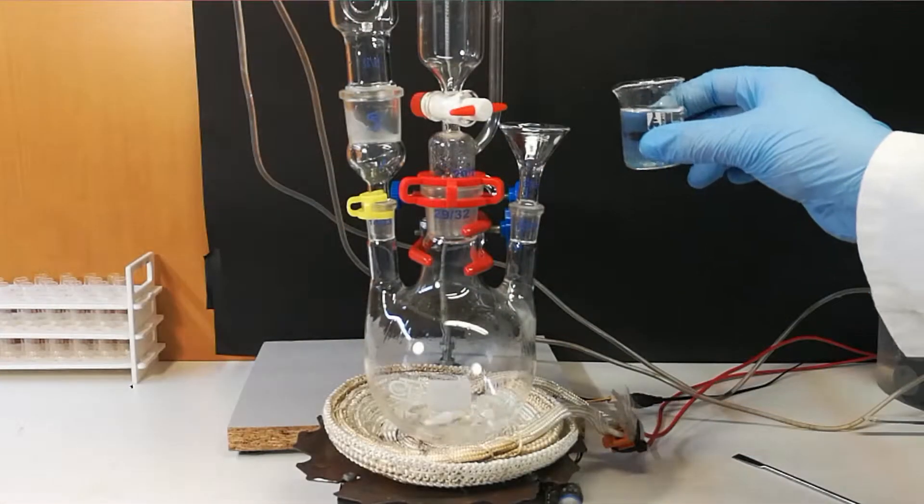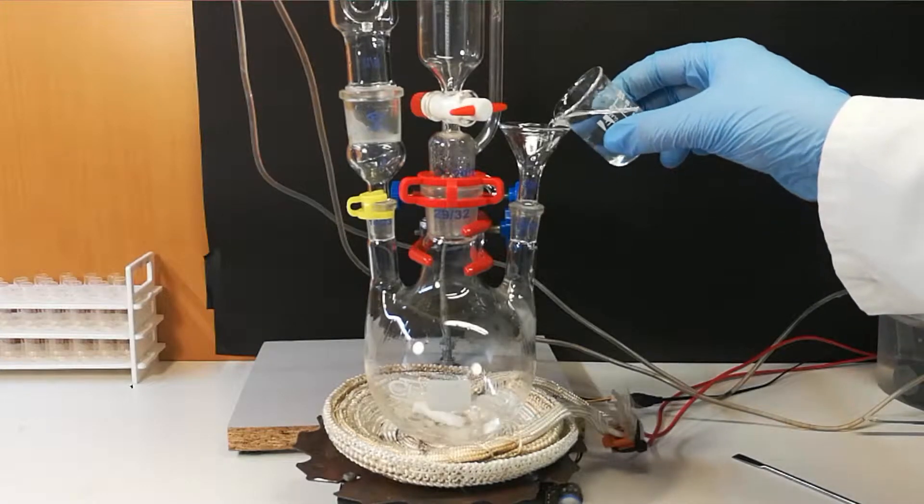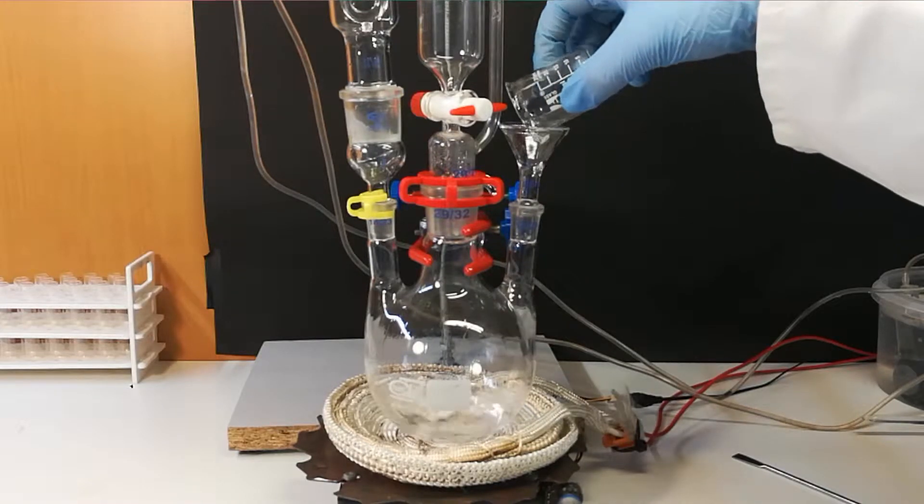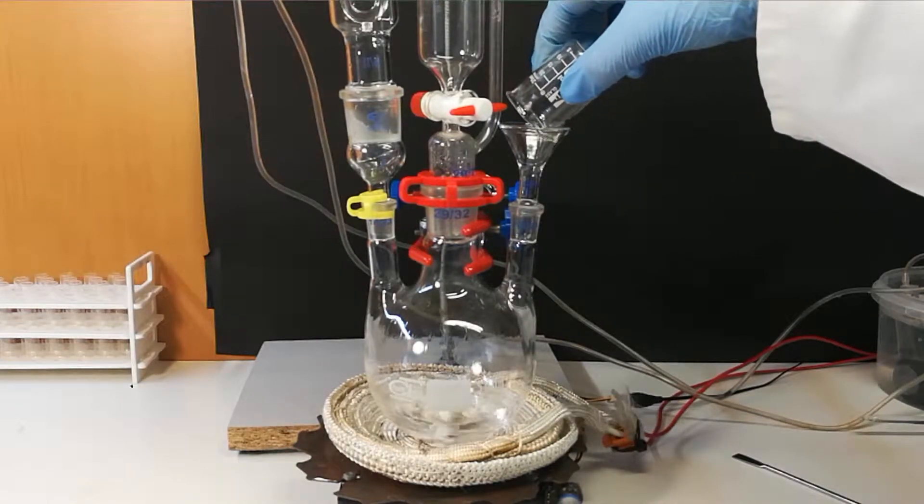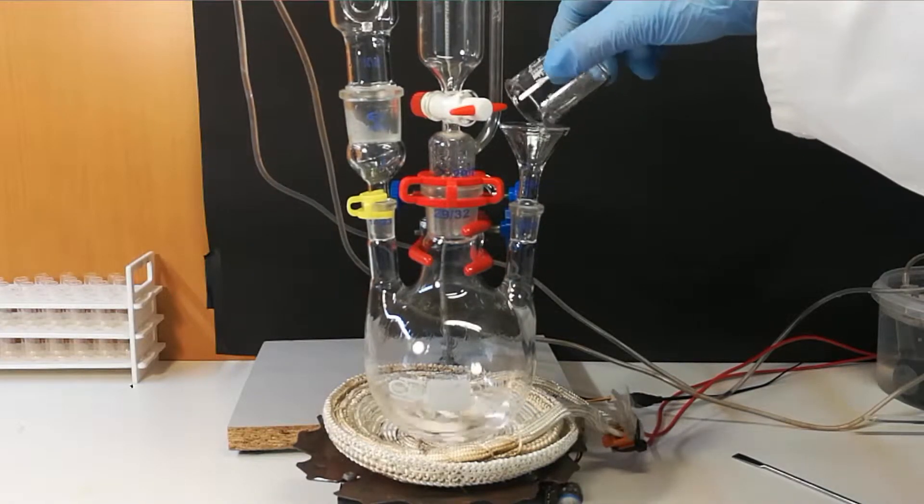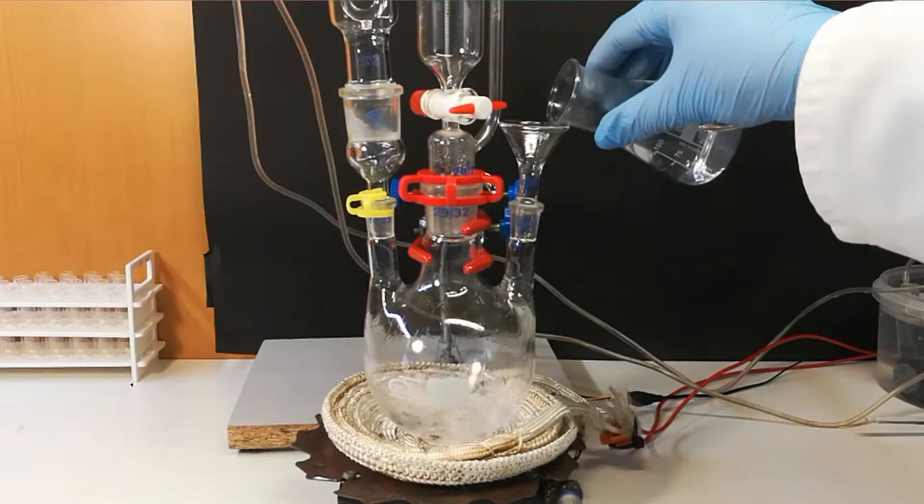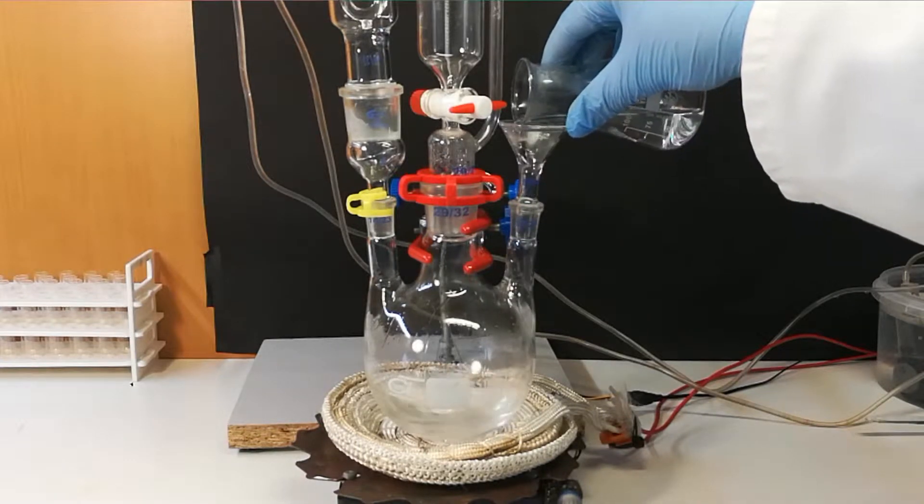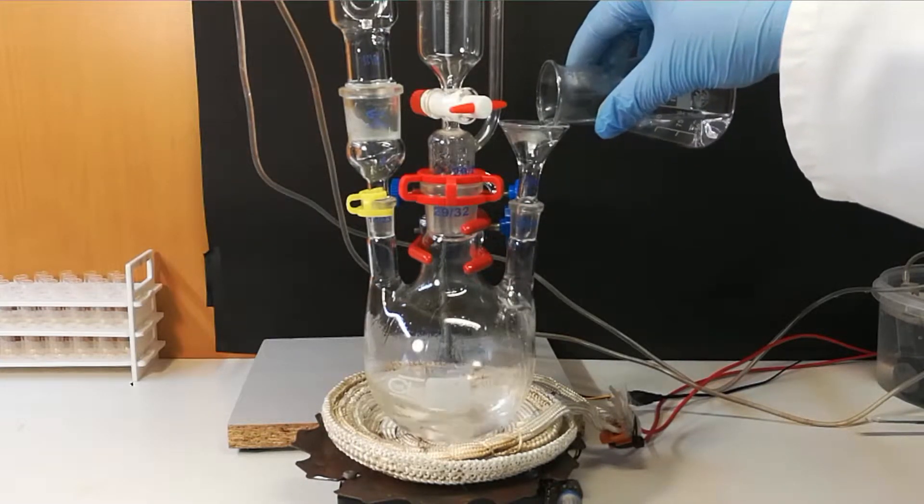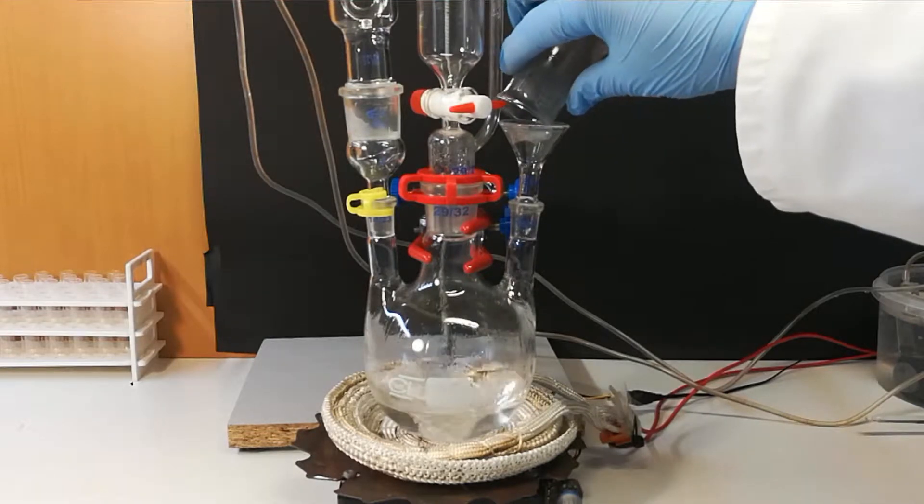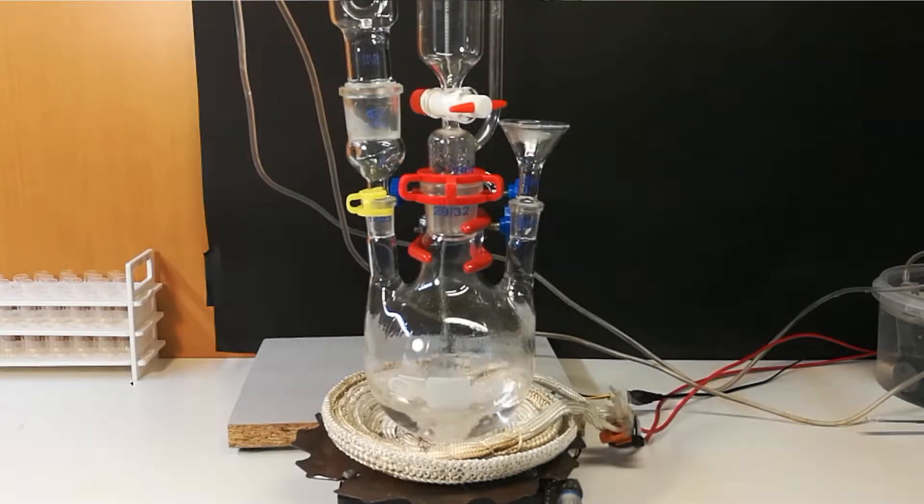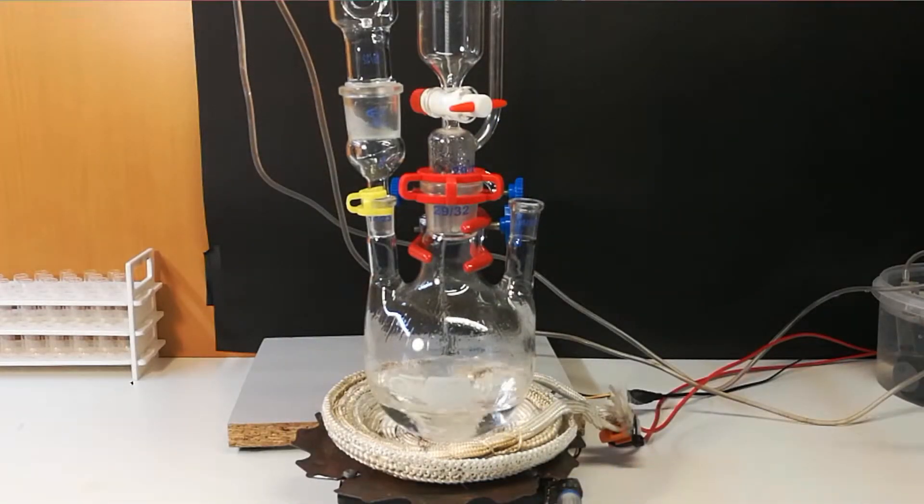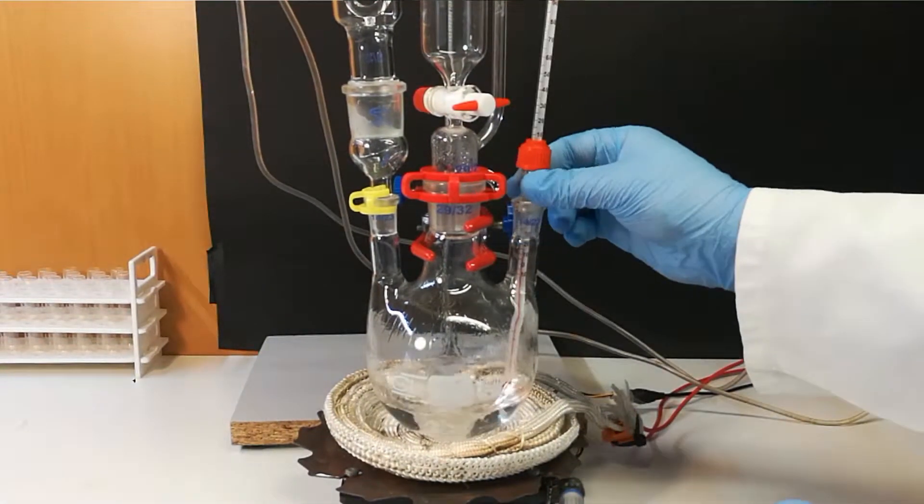Add both mixtures to apparatus containing dripping funnel and reflux condenser. Slowly add base, it generates heat. Close apparatus with thermometer.